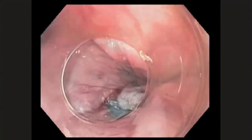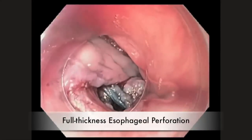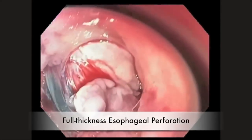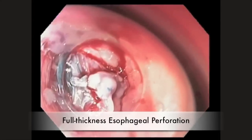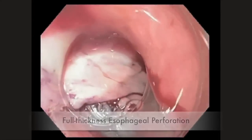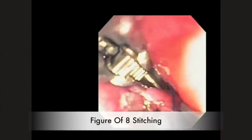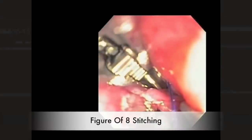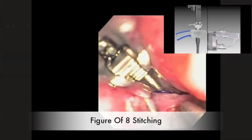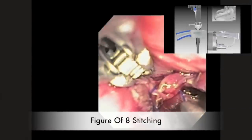Here we present a case of full-thickness esophageal perforation in the mid-esophagus. One can see that the perforation measures about two centimeters in size. Given the size of the perforation and the quality of the tissues, the endoscopic suturing device was used to close the perforation. One can see the mechanism of the overstitch in the top right corner.